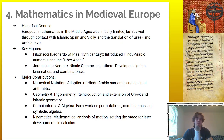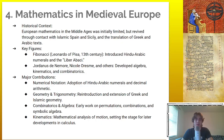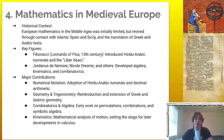In medieval Europe, mathematics in the Middle Ages was initially limited but revived through contact with Islamic Spain and Sicily, and the translation of Greek and Arabic texts. Key figures include Fibonacci, who introduced Hindu-Arabic numerals and the Liber Abaci, as well as Jordanus de Nemore and Nicole Oresme, who developed algebra, kinematics, and combinatorics. Major contributions include the adoption of Hindu-Arabic numerals and decimal arithmetic.